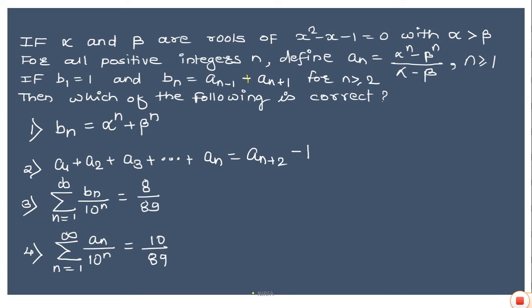I will first check option 1: whether bₙ = αⁿ + βⁿ is correct or not. If it is correct, I can use this value of bₙ to evaluate option 3, since bₙ is involved there. To check whether bₙ = αⁿ + βⁿ holds, I put n = 1, giving α + β, then n = 2, giving α² + β². If both sides are equal, this will be true for all positive integers.